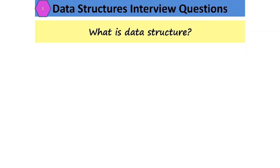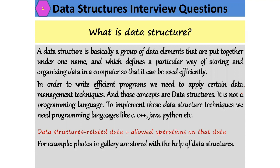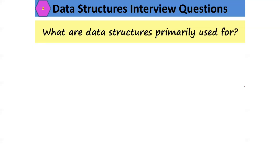What is a data structure? A data structure is basically a group of data elements put together under one name, which defines a particular way of storing and organizing data in a computer so that it can be used efficiently. To write efficient programs we need to apply certain data management techniques — these are nothing but data structures. It is not a programming language; to implement data structures we need languages like C, C++, Java, Python, etc.